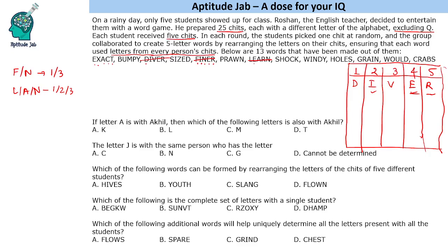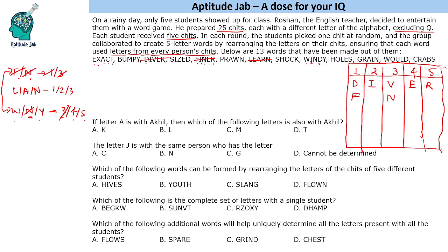The next word we can look at is WINDY, because we see I and D being used. So W, N, Y can be used in positions 3, 4, 5. Now compare these two — it says F and N are in 1 or 3, and here N is common, so N is in position 3. That means F is in position 1. W and Y have to be in 4 and 5, and L and A in 1 or 2.